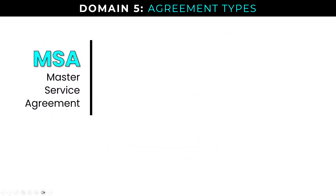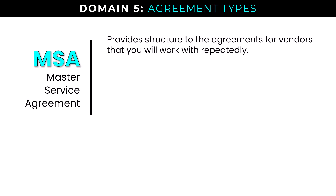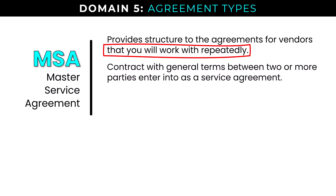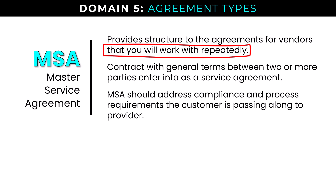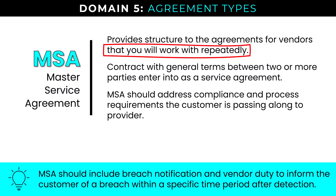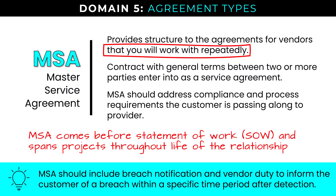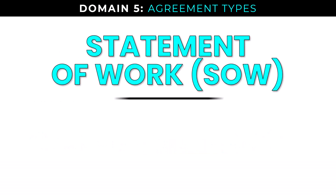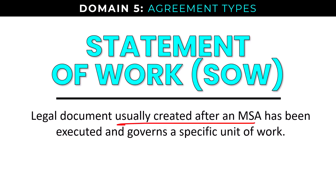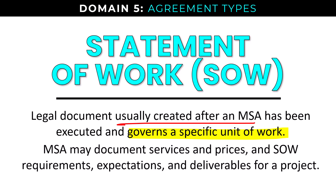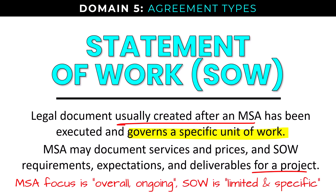The Master Service Agreement or MSA provides structure for agreements with vendors worked with repeatedly. It's a contract with general terms between parties entering a service agreement, addressing compliance and process requirements, and should include breach notification requiring the vendor to inform the customer of a breach within a specific time period after detection. The MSA comes before a statement of work and spans projects throughout the life of the relationship. The Statement of Work or SOW is a legal document created after an MSA, governing a specific unit of work — the MSA is overall and ongoing, while the SOW is limited and specific.